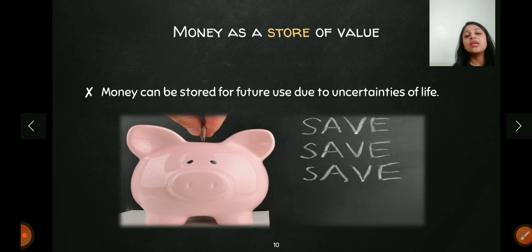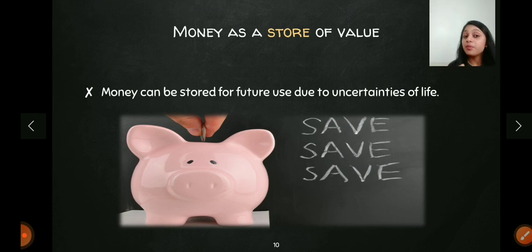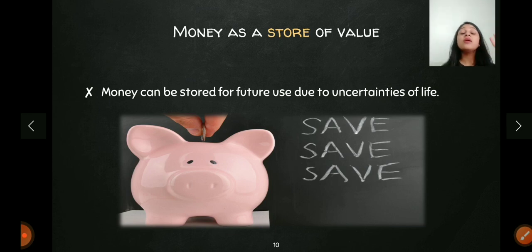The last function is money as a store of value. We can store money for future use. Commodities are perishable in nature and cannot all be saved for the future. Even gold's value is not as stable as money. The value of money is very stable compared to other commodities, so we can save money for future uncertainties — for example, in bank saving accounts, deposit accounts, or other investments. So money is also a store of value.